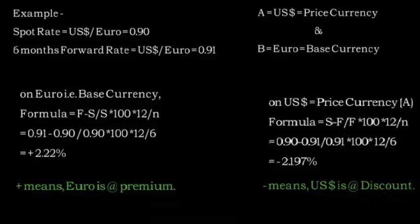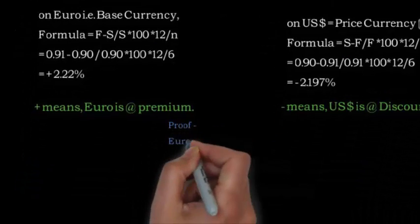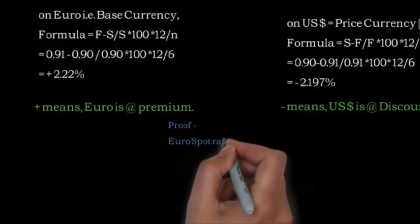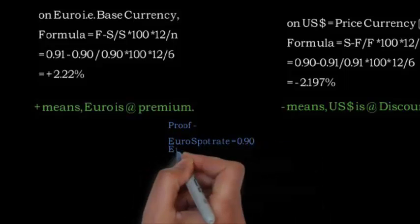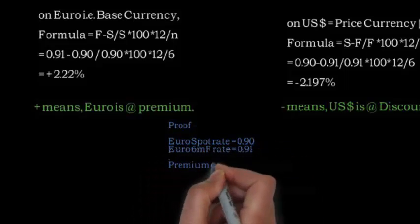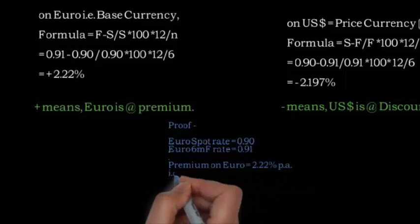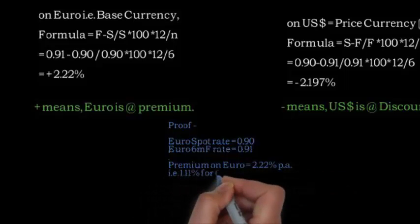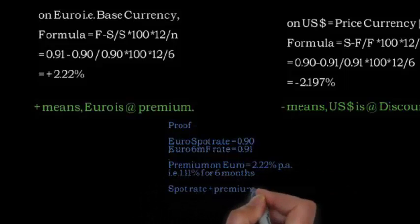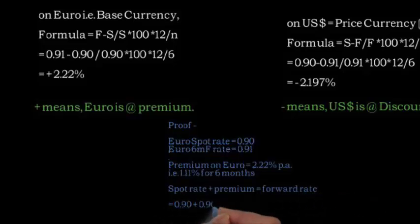To prove what we are calculating, you can see that Euro plus 1.11% — which is the 6-month rate — is equal to the forward rate of 0.91.